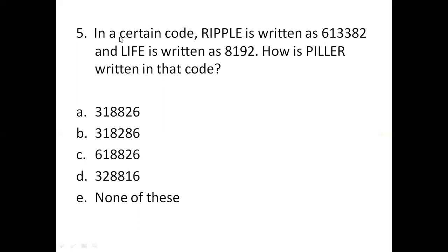Next question. In a certain code, ripple is written as 613382 and life is written as 8192. How is pillar written in that code?